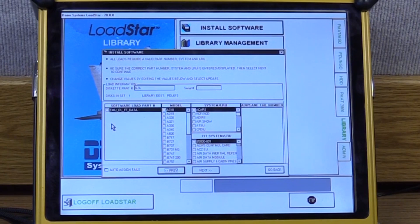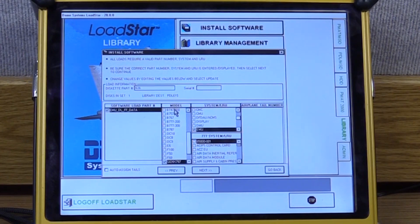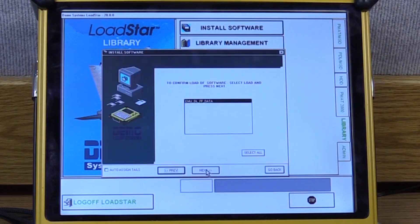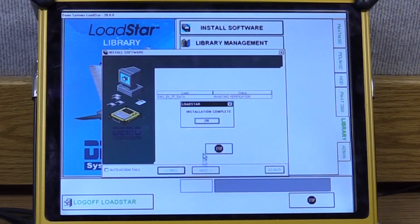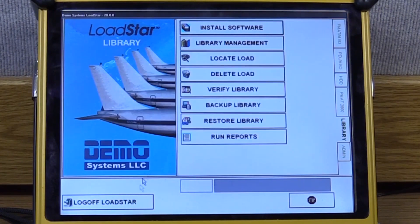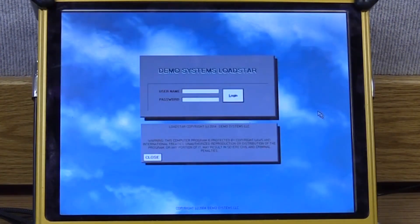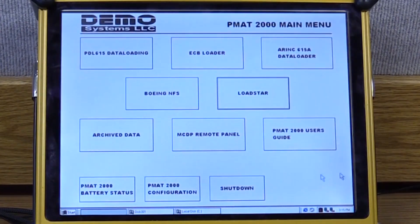Then you'll select the EMU DLFF data, you'll select the correct model number for 1B or 2B and you'll select the correct LRU. Then click the next button. Here you just need to confirm EMU DLFF data is highlighted, select next and load star installation complete. Press ok and then you can log off load star. Now we will connect the cables to perform the download.